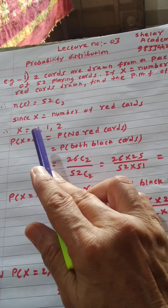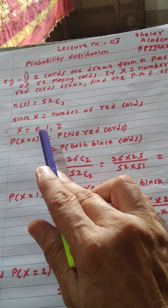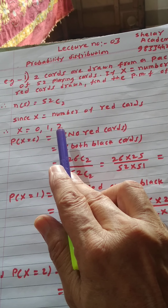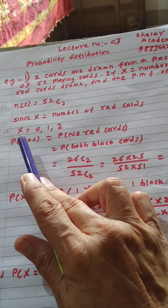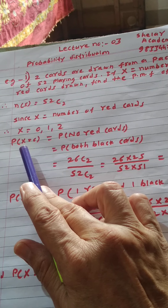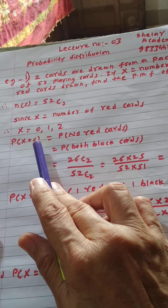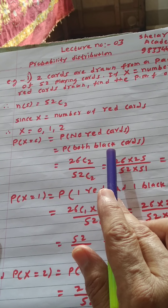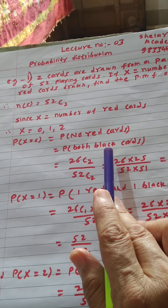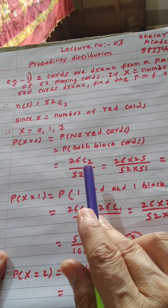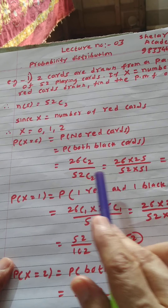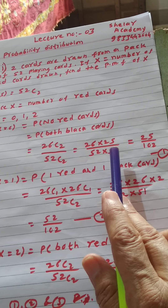Hello students. This is lecture number 3 for probability distribution, and in this lecture we will consider two more examples. The first example: two cards are drawn from a pack of 52 playing cards. If capital X represents the number of red cards drawn, find the PMF — probability mass function — of capital X.